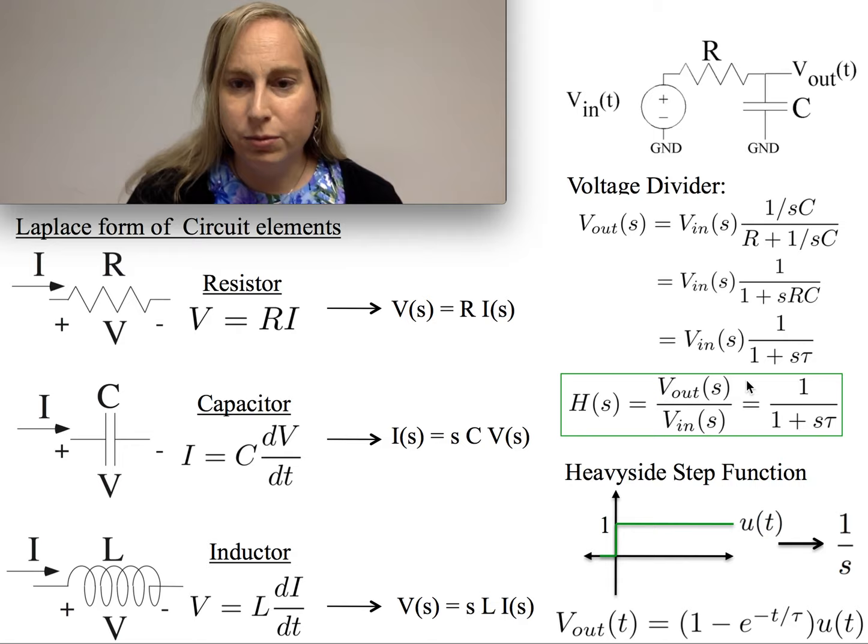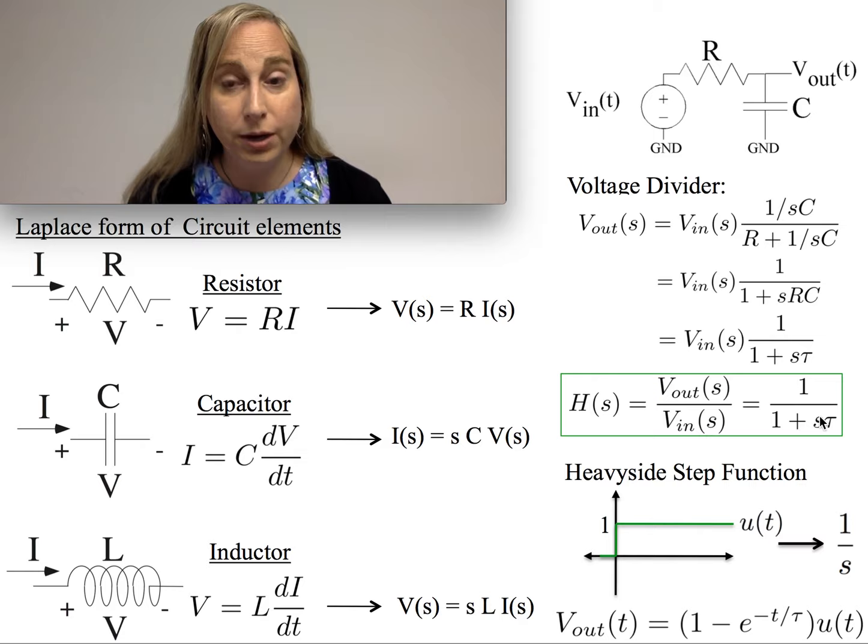And I get this transformation that you may have seen before, where it's 1 over 1 plus S tau, which gives me this transfer function in S, which is an output over the input. You think, oh, okay, that was easy, and that's kind of the thought process we're trying to do here.